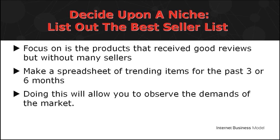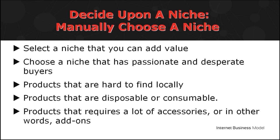Next is to look up any e-commerce website like Amazon and eBay and search for its best-seller list. Focus on products with good reviews but with little sellers — this gives you fewer competitors and better opportunity to make sales. Make a spreadsheet of trending items in the last three to six months to understand market demands. The last method is to pick a niche using the following criteria: 1. Select a niche you can add value to — adding value will set you apart from competitors. 2. Choose a niche with passionate and desperate buyers. 3. Products that are hard to find locally. 4. Products that are disposable or consumable — so you get repeat customers. 5. Products that require a lot of accessories or add-ons. Mix and match these criteria to see which works best for you.